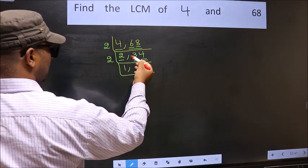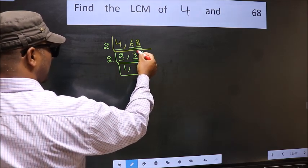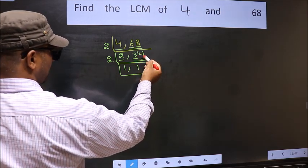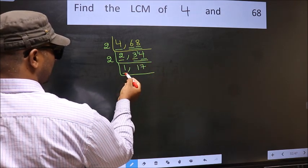First number 3, a number close to 3 in 2 table is 2, 1's 2. 3 minus 2, 1, 1 carried forward 14. When do we get 14 in 2 table? 2, 7's 14. Now we got 1 here.